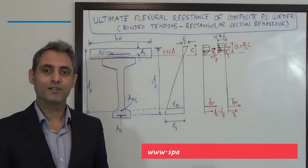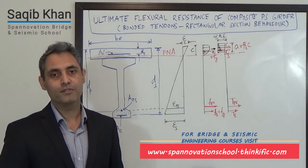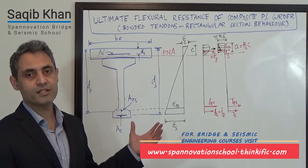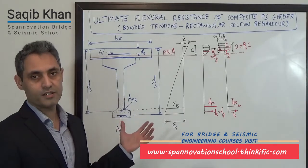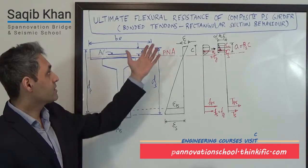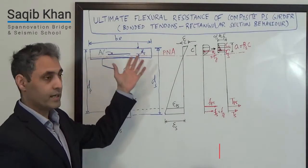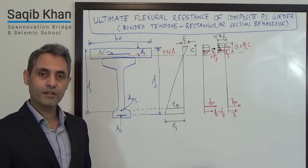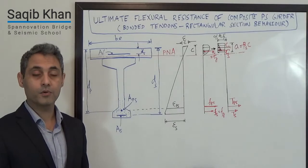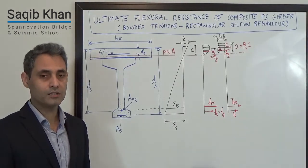Hello everyone. Saqib Khan from the Spanavation Bridge and Seismic School. Today I want to talk to you about how to calculate the moment resistance of a pre-stressed I-girder cross section which is composite with a concrete deck and is exhibiting rectangular section behavior. It has bonded tendons. The idea is to give you a flavor of the type of things we're going to be talking about in a lot more detail in our courses and in our upcoming talks.